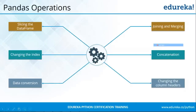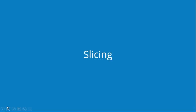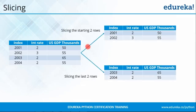These are the operations you can perform with a Pandas DataFrame: slicing the DataFrame to get only a particular part, changing the index value, converting data to a different format, changing column headers, performing concatenation of multiple DataFrames, and joining and merging two or more DataFrames. We'll look at these operations one by one. First, slicing. We have a DataFrame with index values 2001 to 2004, interest rate, and US GDP in thousands. If I slice only the first two rows it will give me data only up to 2002; if I slice the last two rows it gives me only 2003 and 2004.